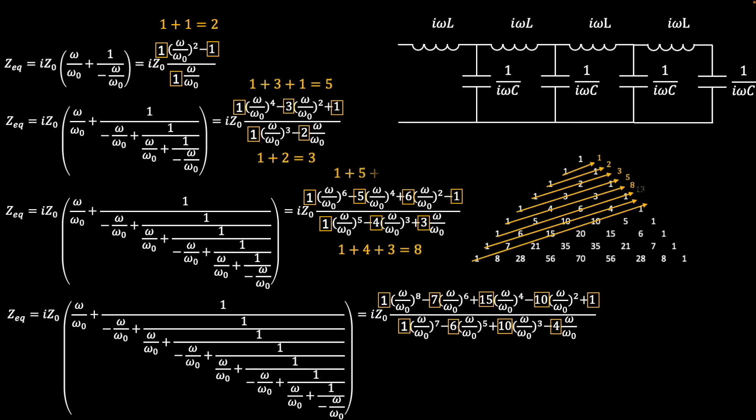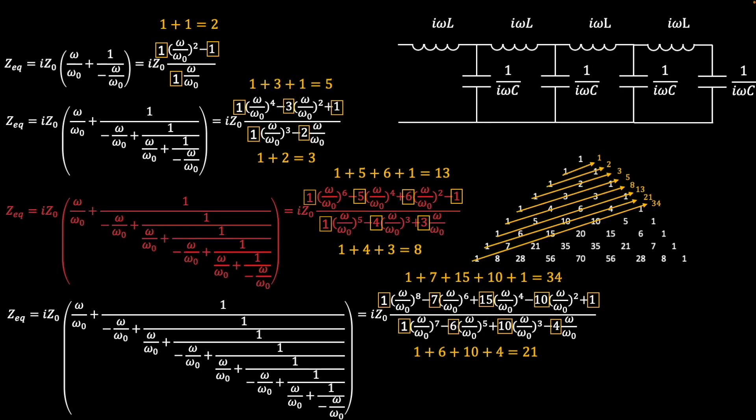If all the impedances are the same value and positive, then these polynomials all collapse into Fibonacci numbers. These functions display interesting behavior when graphed. I'm going to graph the third example here, which I've highlighted in red.